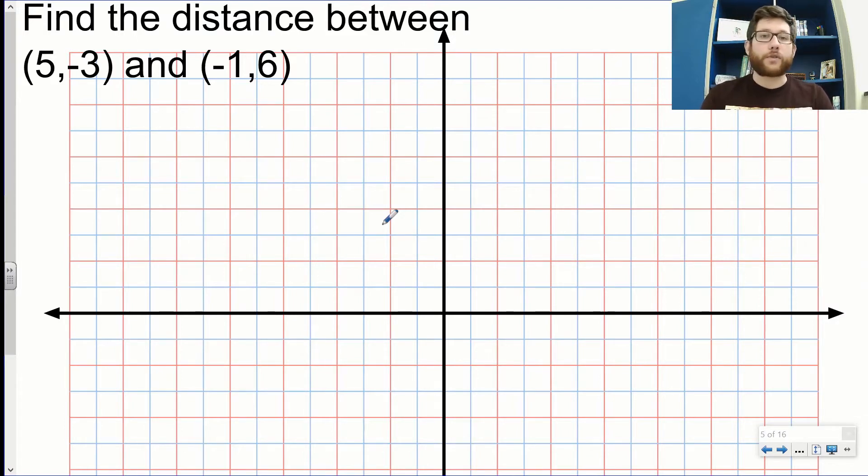I know it looks kind of long and confusing, but if you can understand where it comes from and why it's set up the way it is, it's actually much easier to remember. Let's take a look at these two points and find the distance. When I do these problems, I want to make a right triangle. Just like with distance and midpoint on a graph, we're thinking right triangles.